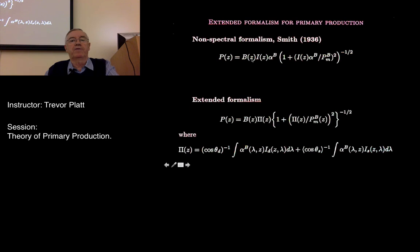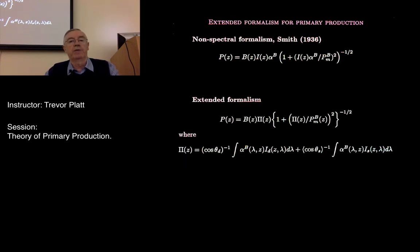As an example, the Smith equation — a non-spectral model for the photosynthesis-light curve in the form of a rectangular hyperbola — contains the product I times alpha. To make it spectral, you simply substitute those terms with their wavelength-dependent spectral equivalents. For more detail, this is all in the ppm-omni file.